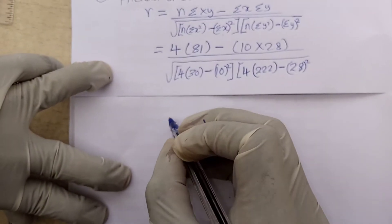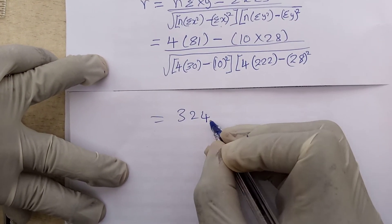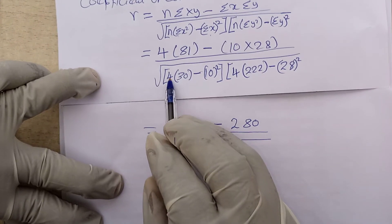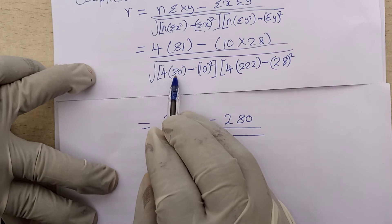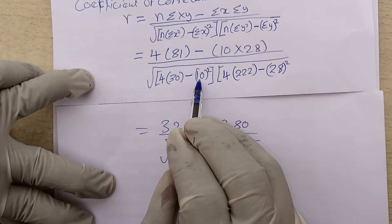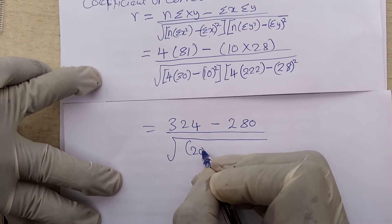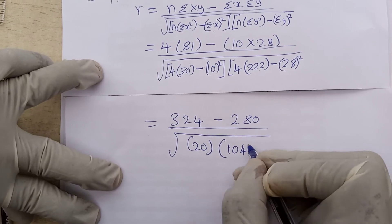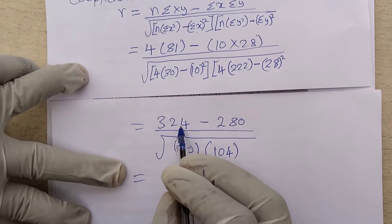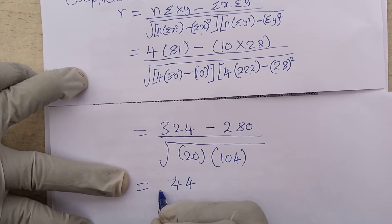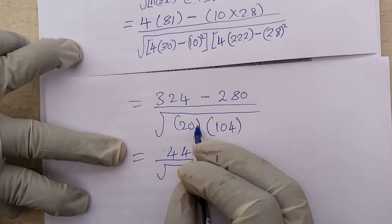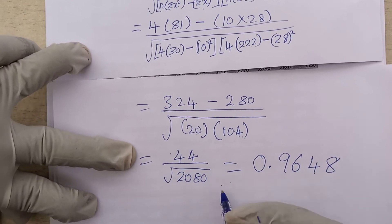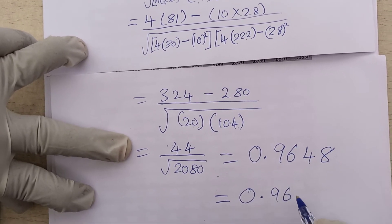Calculating: four times eighty-one is three hundred and twenty-four, minus ten times twenty-eight which is two hundred and eighty, all divided by the square root of four times thirty is one hundred and twenty, minus ten squared which is one hundred, giving twenty — multiplied by four times the sum of Y squared minus twenty-eight squared which gives one hundred and four. So three hundred twenty-four minus two hundred eighty is forty-four, over the square root of twenty times one hundred and four which is two thousand and eighty. When you input this on the calculator, you get 0.9648, which rounds to 0.965 in three decimal places.